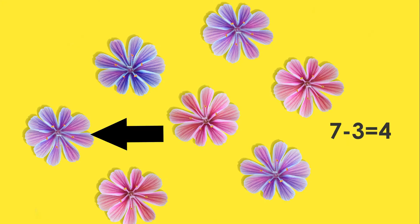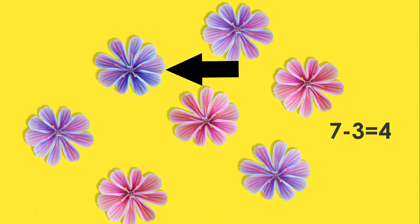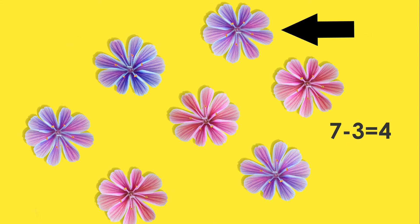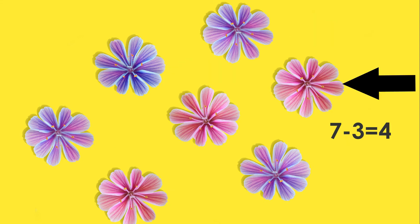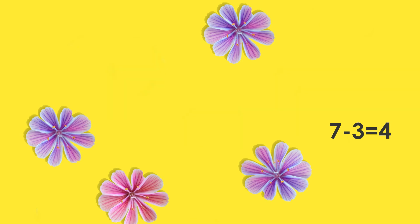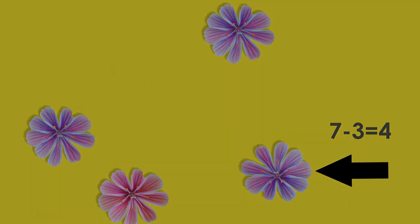Seven minus three equals four flowers. One, two, three, four, five, six, seven. Take away three. One, two, three, four.